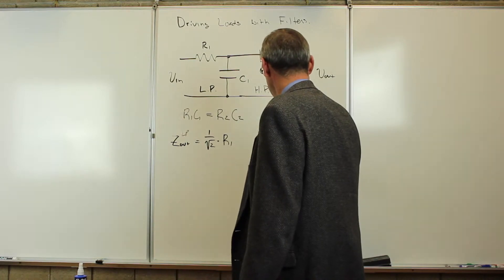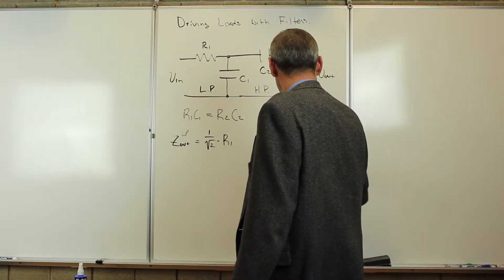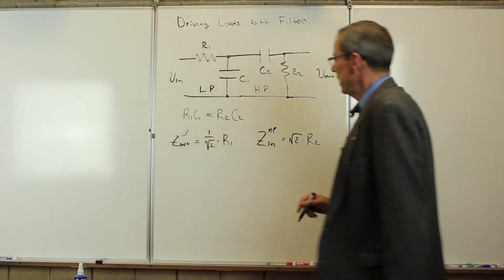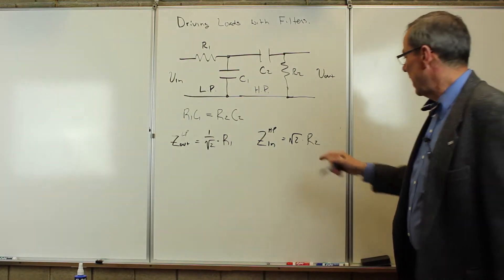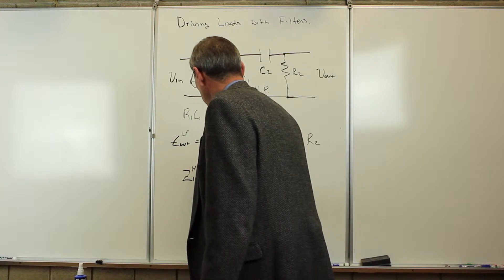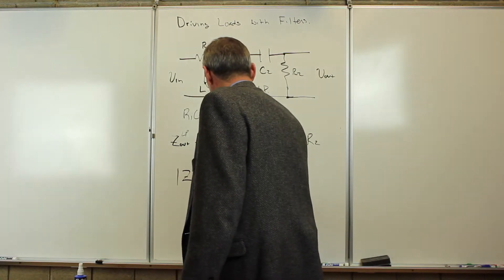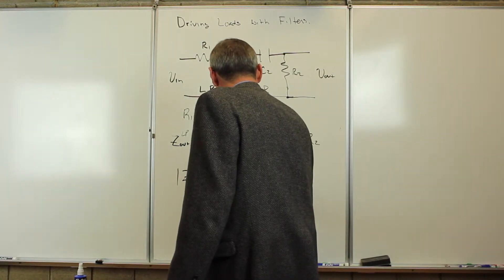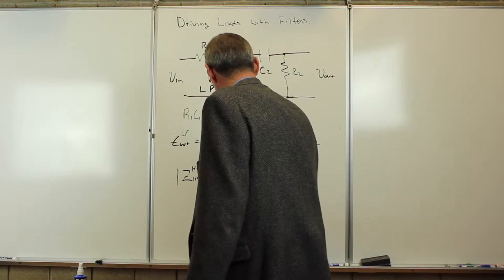Here's the high-pass. This is going to be square root of 2 times R2 and in order not to have any sag, we have to have Zin high-pass much, much bigger than Zout of the low-pass.